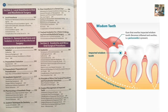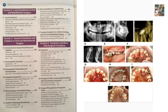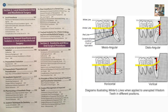We also have pericoronitis — its clinical features, complications, and treatment are important as a short note. After that, the classification of impacted teeth — impaction of the third molar and impaction of canines are important. Winter's classification is very important.